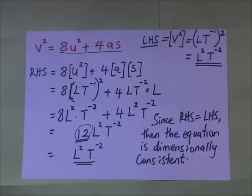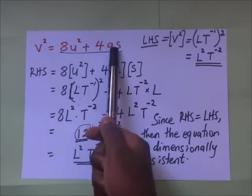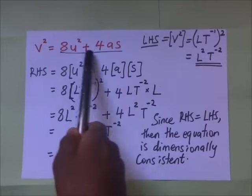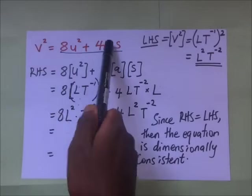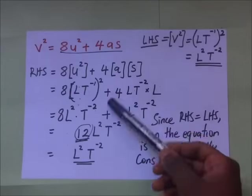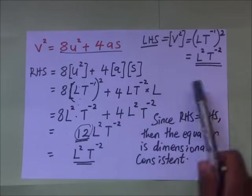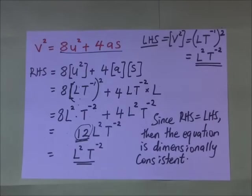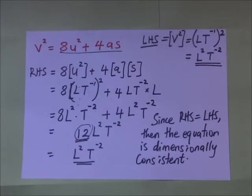We all know that the third equation of motion is V² = U² + 2as. The equation V² = 8u² + 4as is a wrong equation from theory. But when we analyze it using dimensions, we find that it is dimensionally consistent — it is dimensionally consistent but has wrong values of the constants 8 and 4.